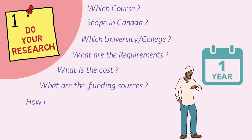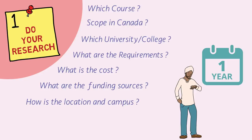Last but not least, think about location and campus. If you want to live in a bigger city like Toronto, look for universities in the GTA region. If you prefer a quieter city, you can look for universities and colleges in the Waterloo region. Going further north, you can check universities in London. These are all points you should be clear about during your research.